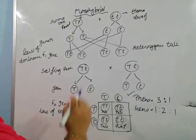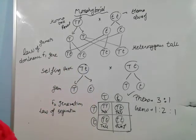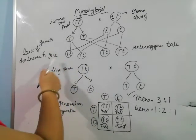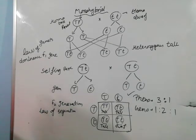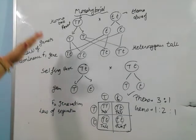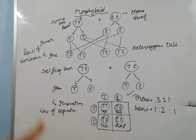Law of segregation — monohybrid cross. Law of dominance — monohybrid cross. Law of dominance from F1 generation, law of segregation from F2 generation. So this is how the monohybrid cross works and these are the two laws that arise from it.